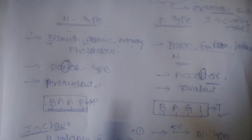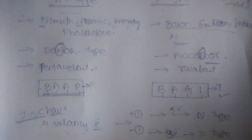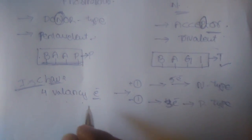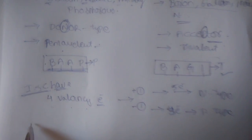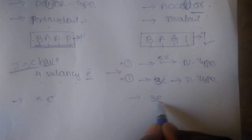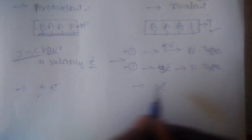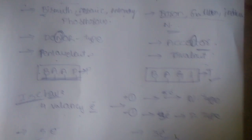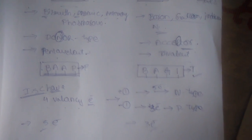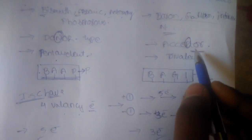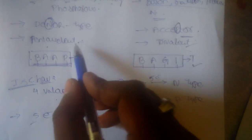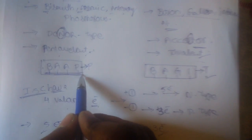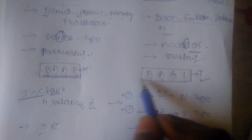These are the basic things you need to know. They ask at least one question from this. Elements with five outermost electrons are fifth group elements; those with three outermost electrons are third group elements. They ask what the third group elements are and what the fifth group elements are — essentially asking about trivalent and pentavalent impurities.